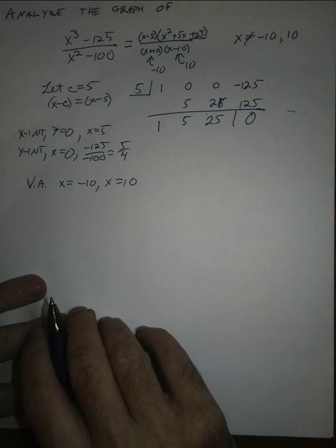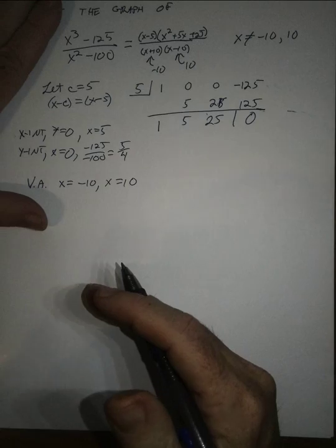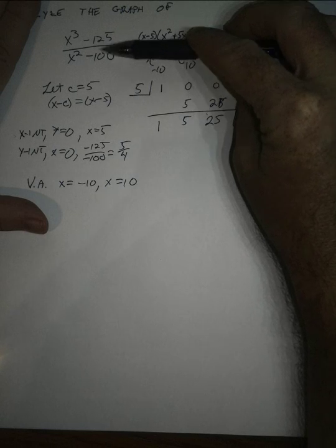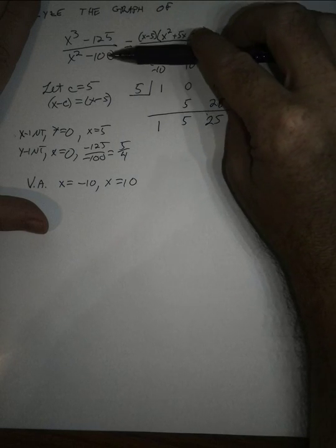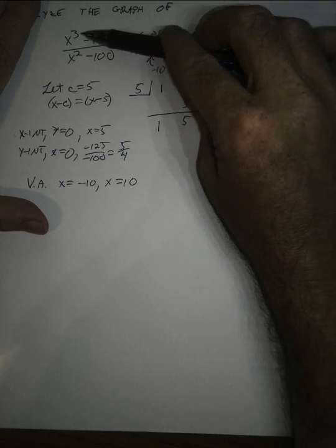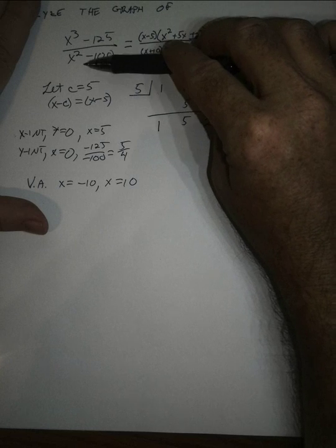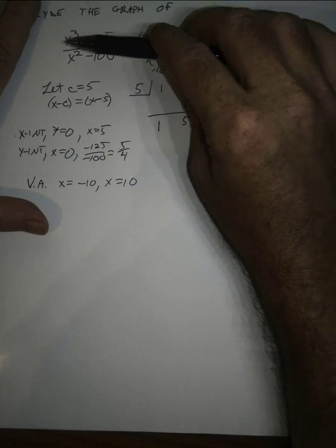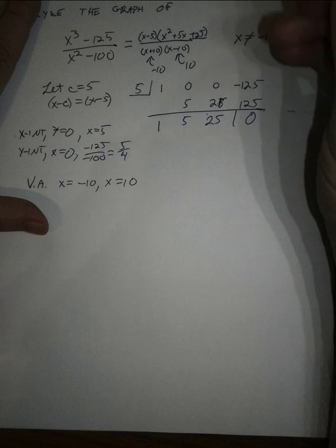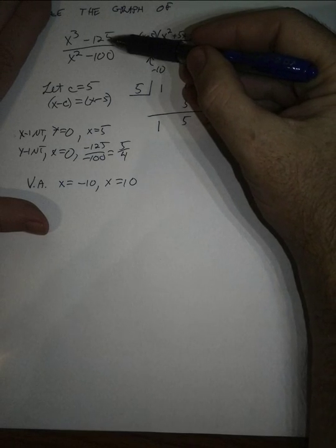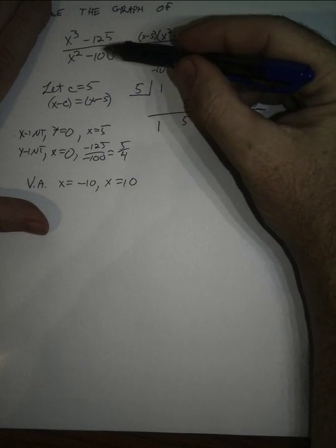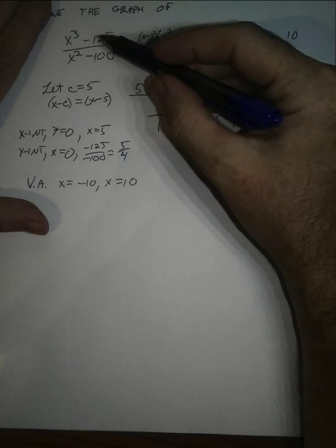Next, we want to analyze the end behavior and look for asymptotes. When the degree of the denominator is greater than the numerator, the horizontal asymptote is zero. When they have the same degree, we get a constant horizontal asymptote. In this case, the numerator is of higher degree than the denominator, so we'll have a slant asymptote, and we need polynomial long division to find its equation.